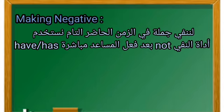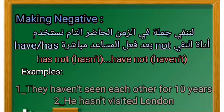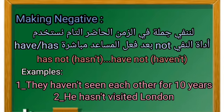لننفي جملة في الزمن الحاضر التام، نستخدم أداة النفي not بعد الفعل المساعد مباشرةً — have/has. لتصبح بالاختصار: has not = hasn't، have not = haven't. مثال: They haven't seen each other for 10 years — هم لم يروا بعضهم منذ 10 سنوات. He hasn't visited London — هو لم يزور لندن.